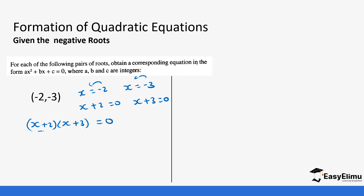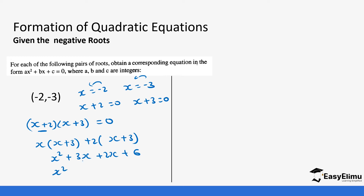So our two factors are (x + 2) and (x + 3), and if you multiply them it equals 0. We open the bracket: x(x + 3) + 2(x + 3). This becomes x² + 3x + 2x + 6, which simplifies to x² + 5x + 6. And that is your answer.